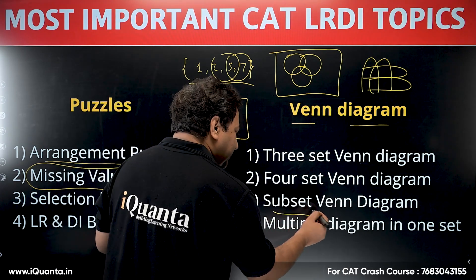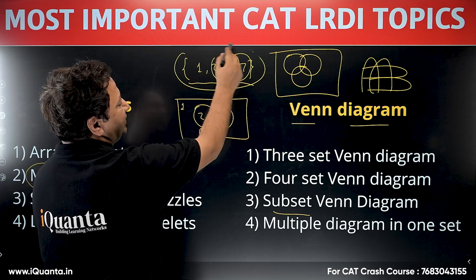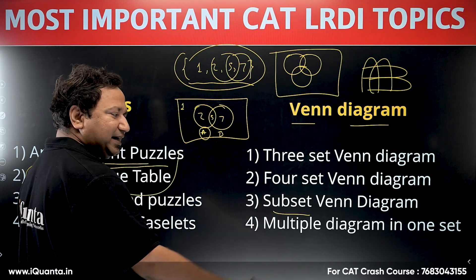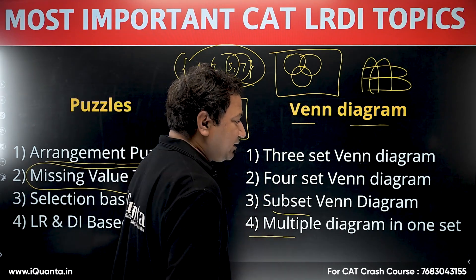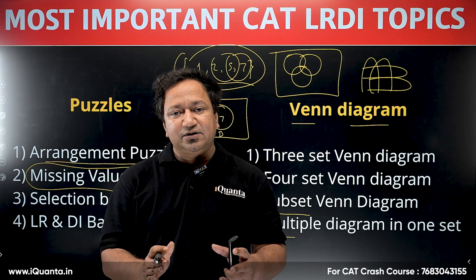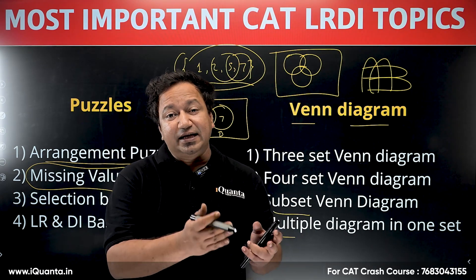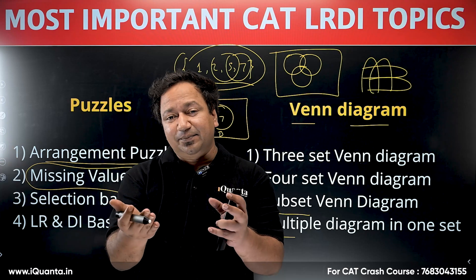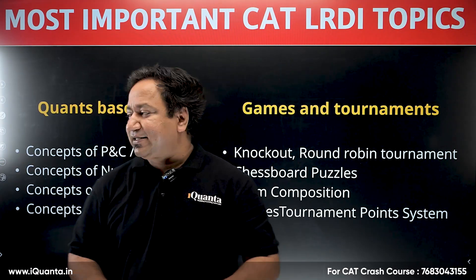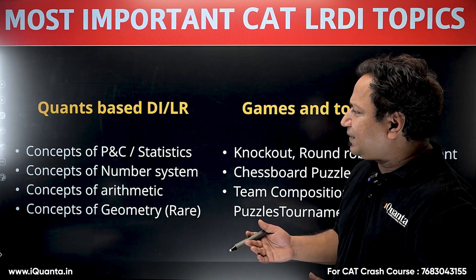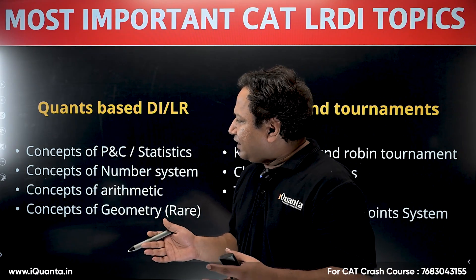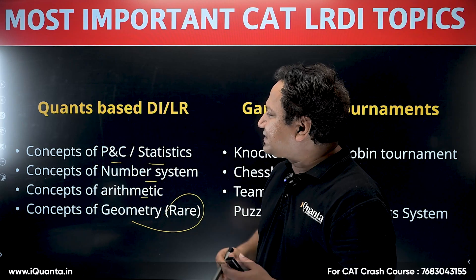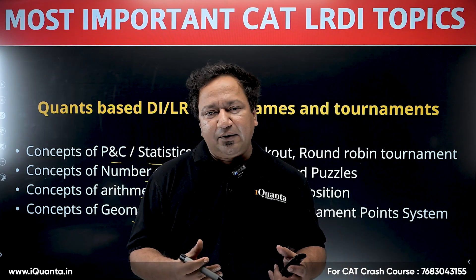A subset contains some or all elements of the universal set. Multiple diagrams may be needed in one set when a single Venn diagram isn't sufficient — you might need two or three diagrams for certain cases with missing entries. Next is quant-based DILR, which is mathematical in nature. Sets can be based on P&C, statistics, number systems, or arithmetic; geometry is rare but possible.